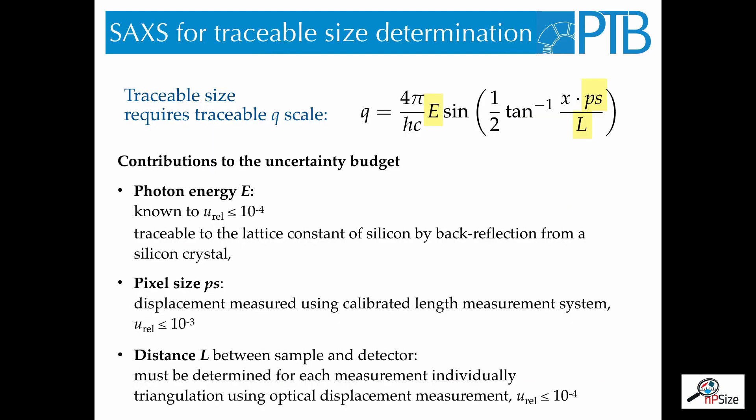Now, in order to get a traceable size determination by SAXS, we first need a traceable q-axis of our scattering curve. In the formula for q, there are three input quantities, namely the photon energy, the pixel size of the detector, and the distance between sample and detector.